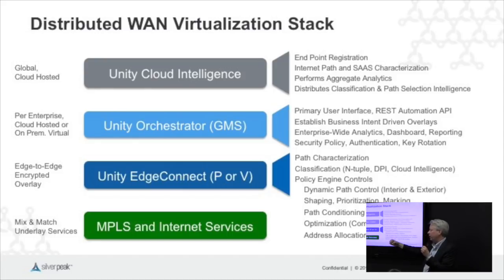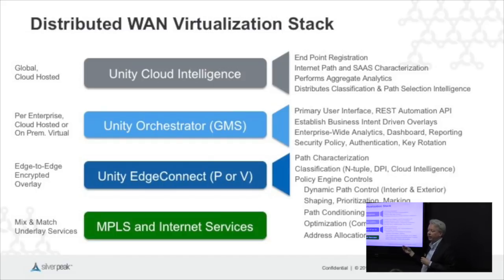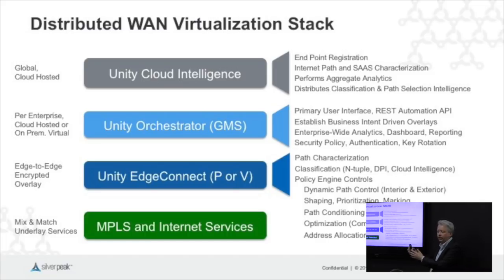We're also able to do the equivalent of dynamic exterior routing, where instead of OSPF you'd be using BGP. The enterprise may have four or five gateways out to the internet spread across their network. For a given service they want to work out which gateway is best. For something like YouTube, they might want to dump it off the network as quickly as possible, but for Salesforce or Office 365, they may want to keep it on the network to the closest point to where it's going. That's what we mean by the exterior version of path control.